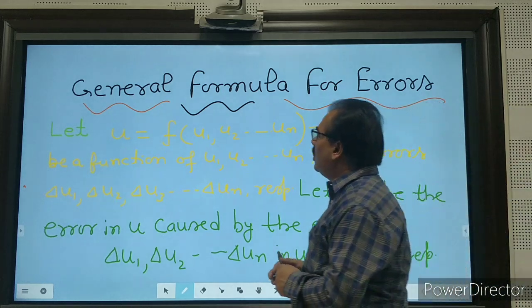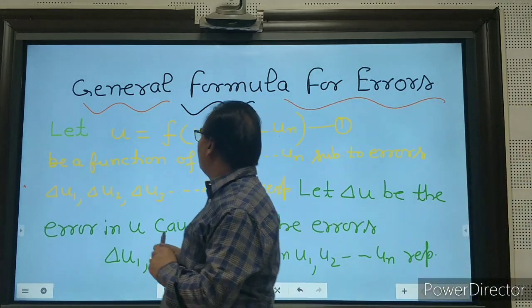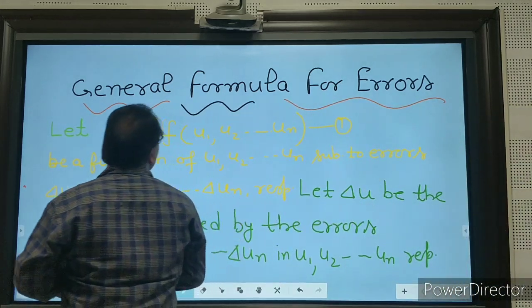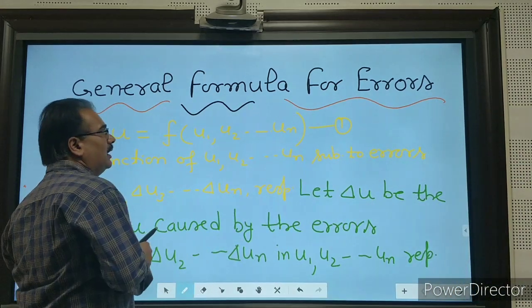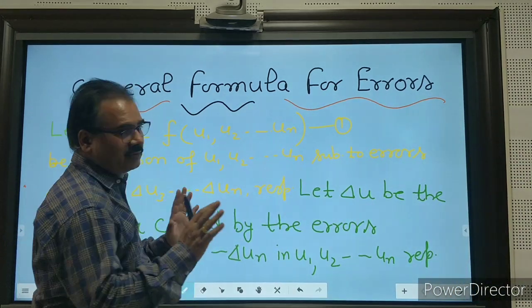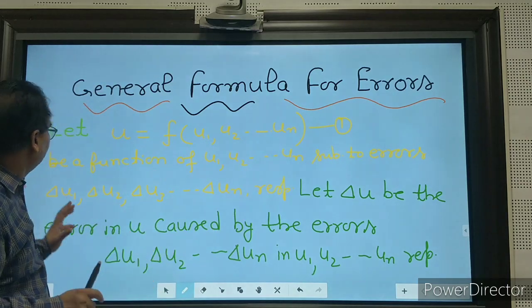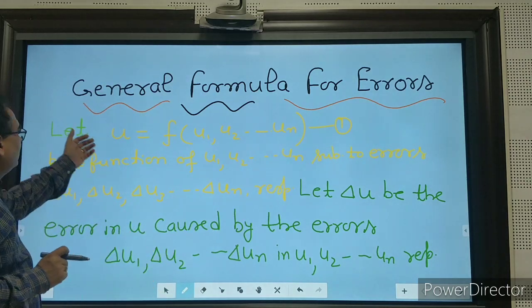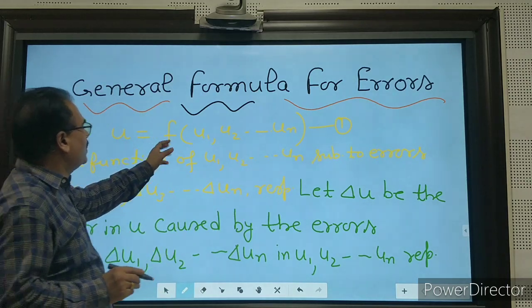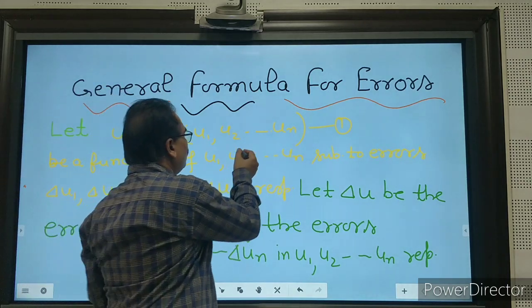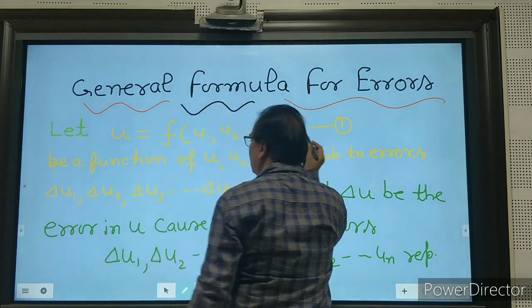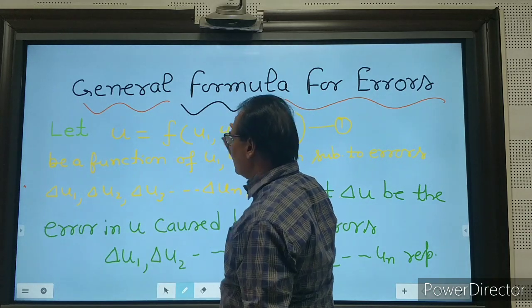Good morning students. Today we are going to discuss the general formula for error analysis. Let u be equal to a function of u1, u2, up to un — this is equation number 1.